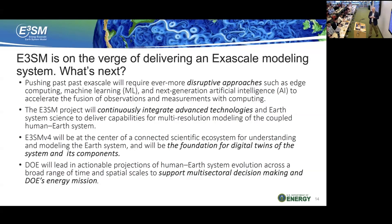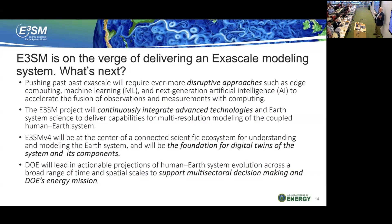A question about physics versus biogeochemistry: how is the partitioning done? The models are developed by taking the pieces and putting together the physical model first — you can't get the BGC right until you get the physical part right. The biggest problem is ocean transport: if the ocean transport is wrong, all the ocean BGC is wrong, which has been a major issue. You can't have a good BGC model without a good physical climate system driving it, mainly because of the transport and other aspects.